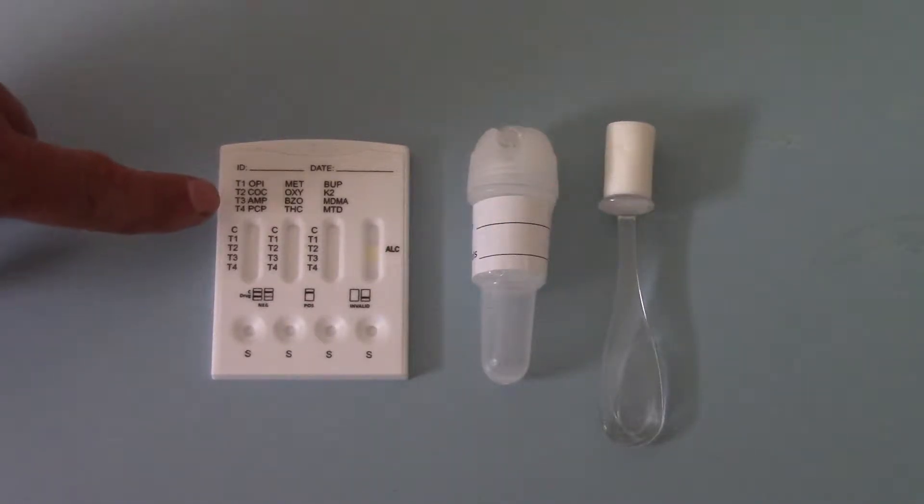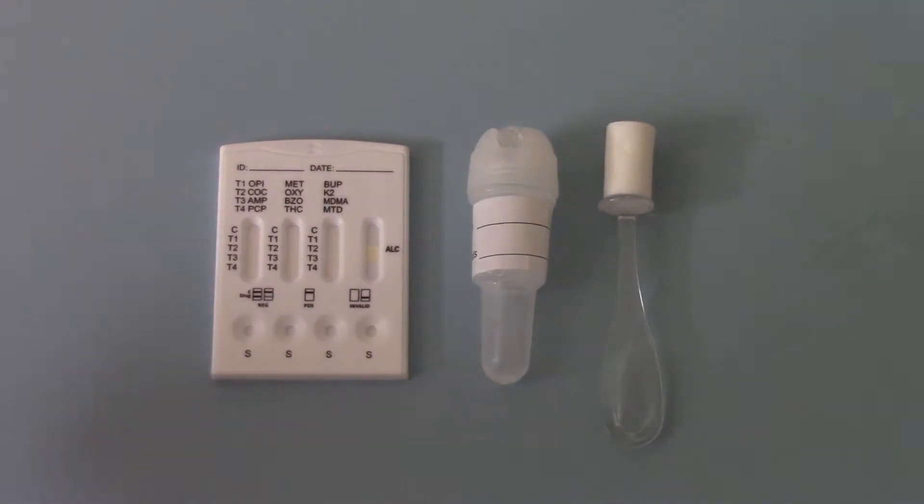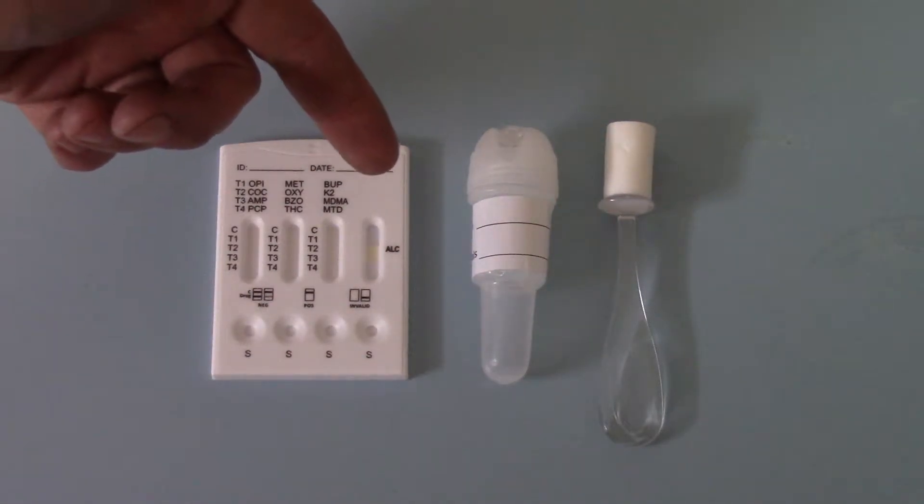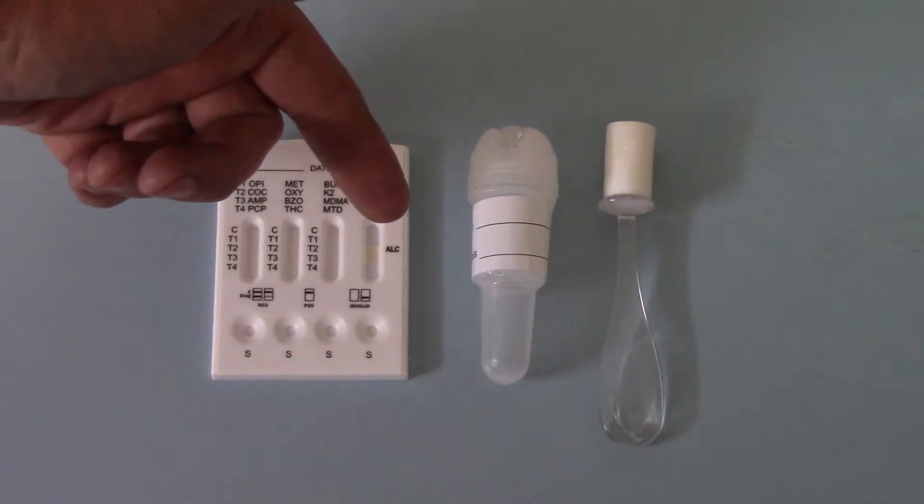So in this column here on the left hand side, T1 is an opiate screen, T2 is the cocaine screen, T3 amphetamine, T4 PCP, and that goes across all three windows. And then on the very right hand results window you have a single alcohol test screen panel pad.